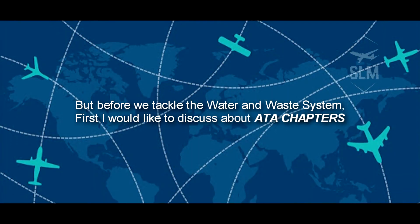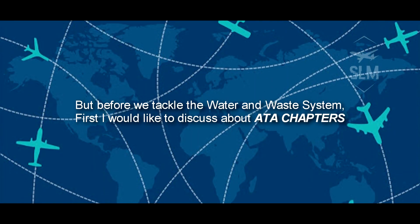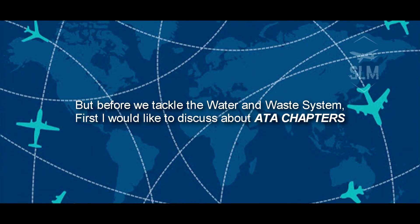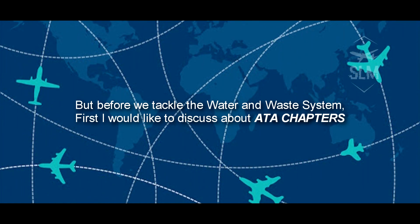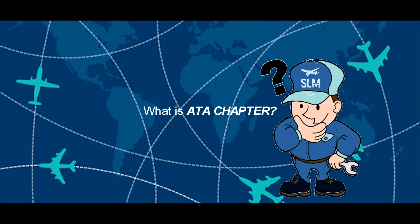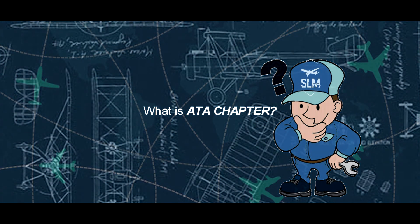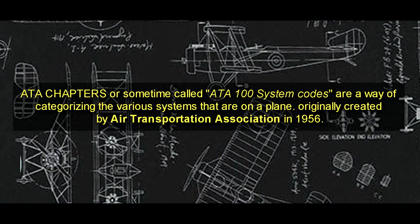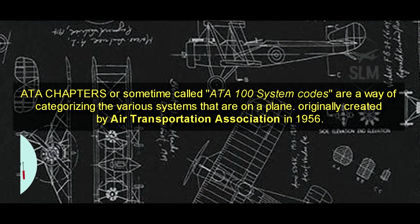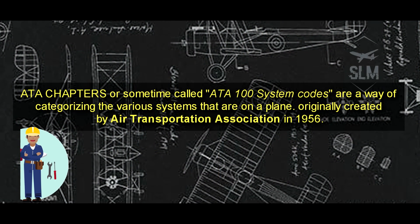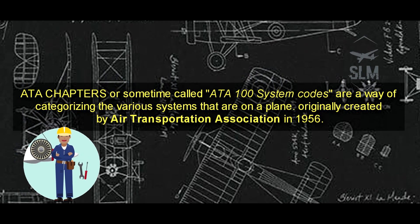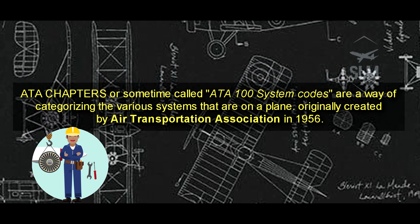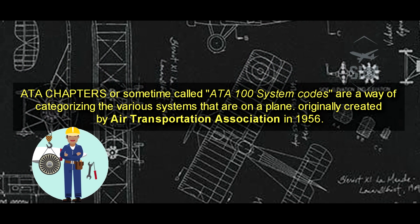But before we talk about the water and waste system, first I would like to discuss about ATA chapters. What is an ATA chapter? ATA chapters, sometimes called ATA 100 system codes, are a way of categorizing the various systems that are on a plane.